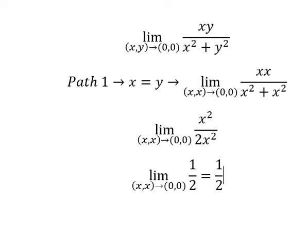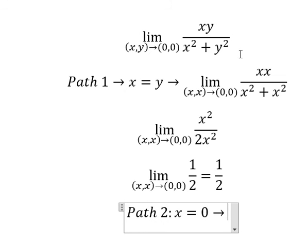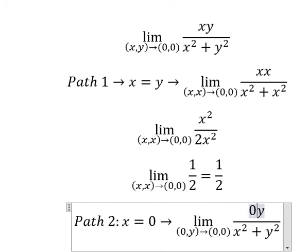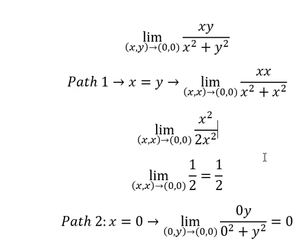Now let's consider path number two, that is about x equal to zero. So we put zero here and here, and we see that this one equals zero because this one has zero. However, we have zero plus y squared, so this one equals zero.